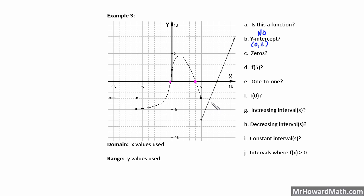So we have three zeros, three solutions, three x-intercepts on this graph. Next, function notation f(5): this is f of x, so when x is equal to 5, what is the y value? When x equals 5, y is negative 3. So f(5) equals negative 3.